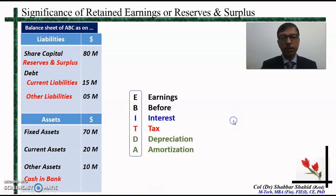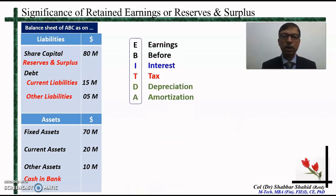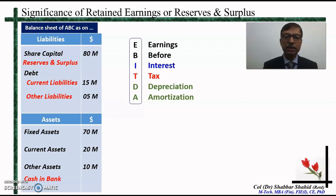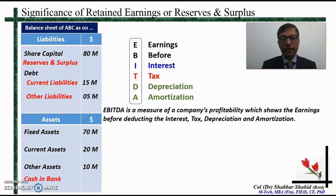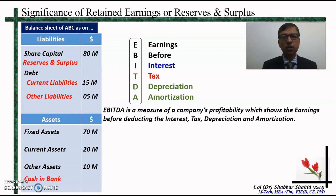Now we come to something called EBITDA, or earnings before interest, tax, depreciation, and amortization. In layman's language, we can call it something like gross profit. Let us say that the EBITDA of the company for a financial year is 21 million dollars.